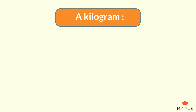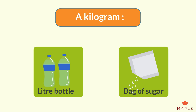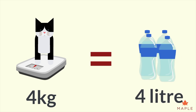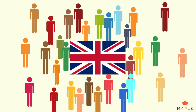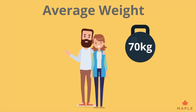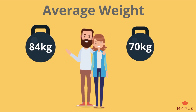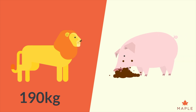A kilogram would be the mass of a litre bottle of water or a big bag of sugar. Miss Garnet's cat weighs around four kilograms, which is the same as four litre bottles of water. The average woman in the UK weighs around 70 kilograms, whereas the average man weighs around 84 kilograms. Compare this to a male lion at around 190 kilograms and a large pig at around 350 kilograms.